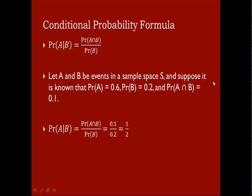Let's do an example and see how this works. Let A and B be events in the sample space S, and suppose it is known that Pr(A) = 0.6, Pr(B) = 0.2, and Pr(A ∩ B) = 0.1. So the probability of A given B will simply be A intersect B over B, which is 0.1 over 0.2, or 1/2.